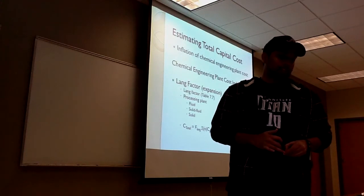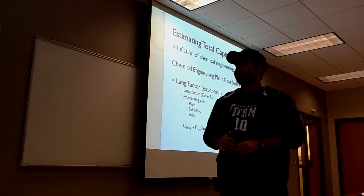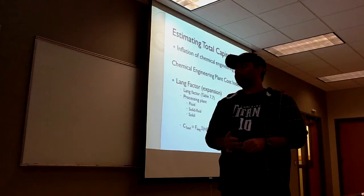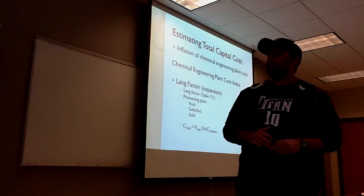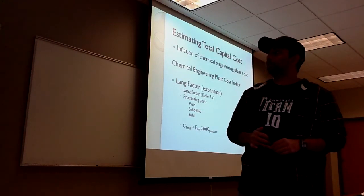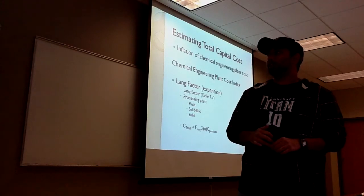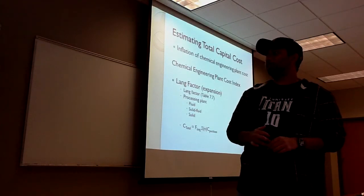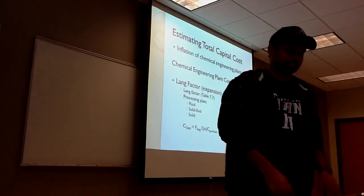The equation used to find total cost is calculated by multiplying the Lang factor, which is represented in table 7.7, by the number of individual units times the purchase cost.